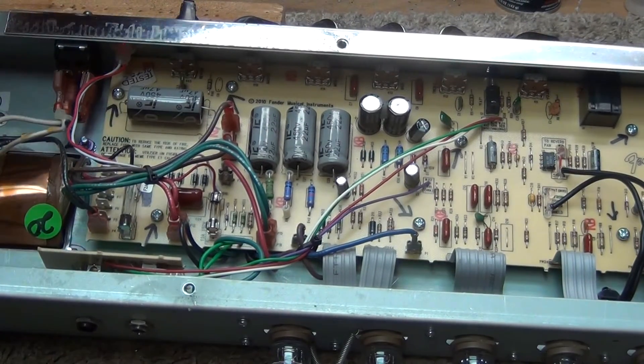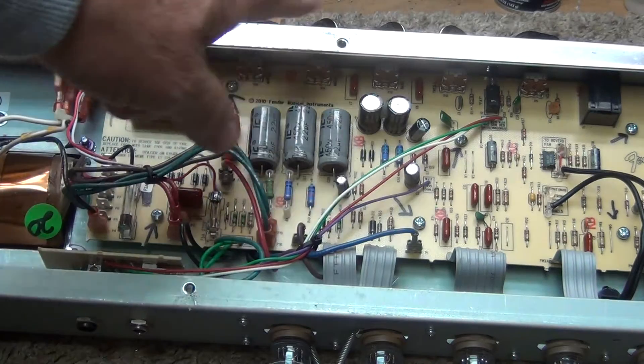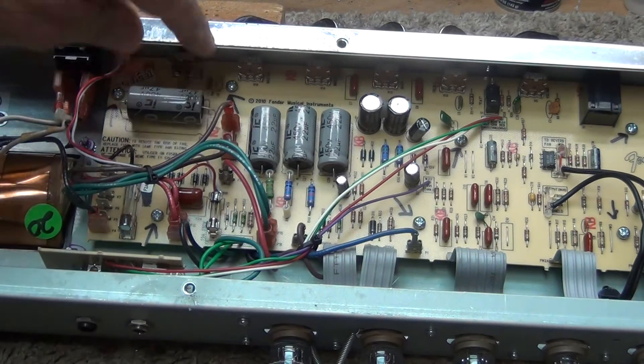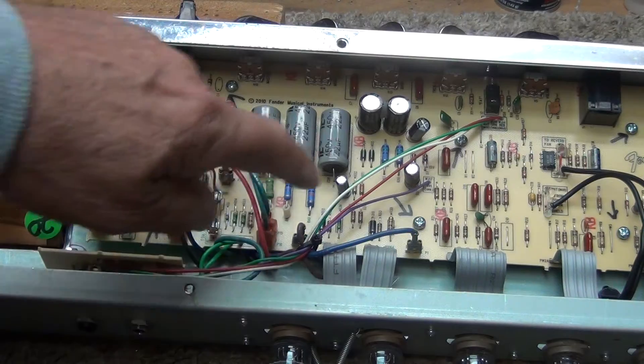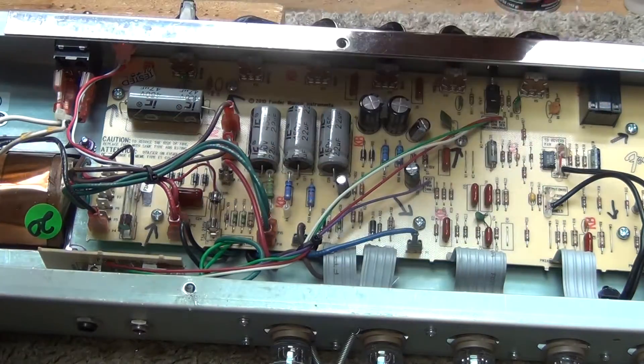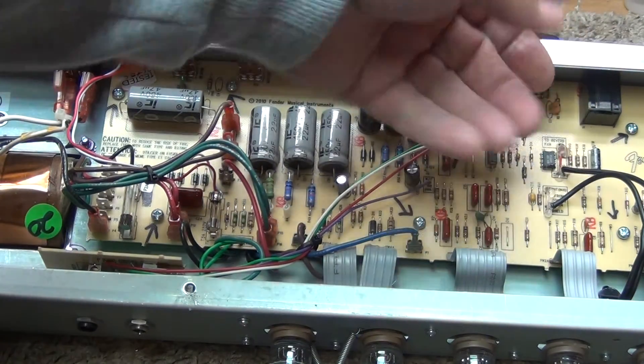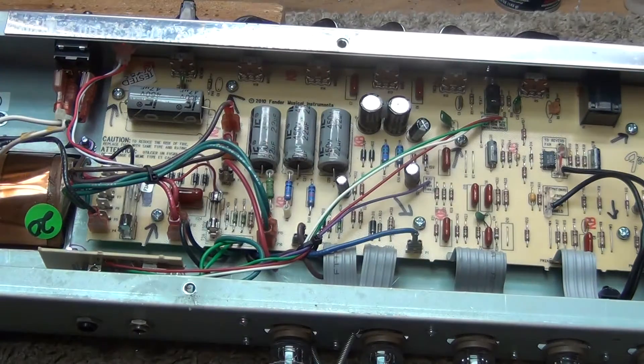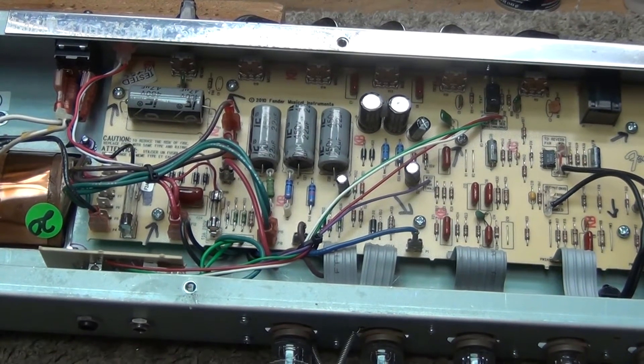Next step is going to be to remove all the knobs and remove the screws on the circuit board so that we can get the board leaned out and get the old input desoldered from the board.